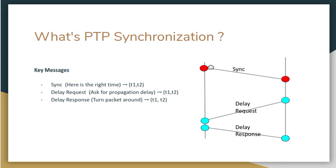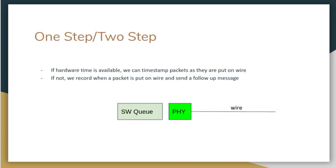That is a high-level view of PTP synchronization. You are able to compensate for what the time should be, and if there are errors due to delays, you can measure those delays and set the clock accordingly. You end up with a very precise clock — depending on the kinds of oscillators you're using, you might have a very high-quality clock on the right side and a very good synchronization.